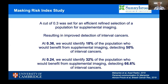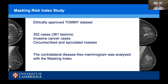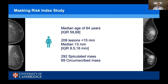The data set we used for this study was the TOMI cohort, a previously collected data set consisting of 352 cases and 361 lesions. These were all invasive cancers featuring either a circumscribed or spiculated mass. We took only the contralateral side to the cancer — the cancer-free side — to be analysed by the masking risk index so the lesion didn't interfere with the creation of those density maps. The median lesion size was 30 millimetres, with 208 lesions less than 50 millimetres in size. The median age of this cohort was 64 years, and we had more spiculated than circumscribed masses.